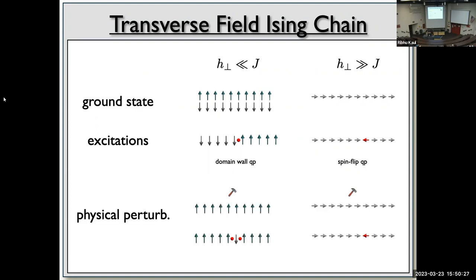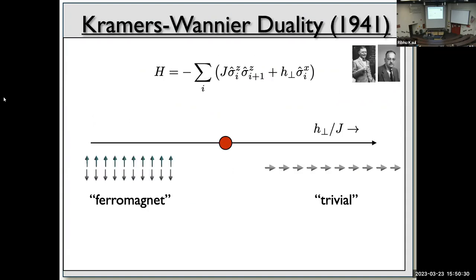Of course this is a cartoon state when J is zero and h is infinite. With a finite J there are small quantum fluctuations — virtual spin flips taking place all the time — but these don't give rise to conserved particles in the conventional sense. There is still a gap to create real excitations above the ground state.